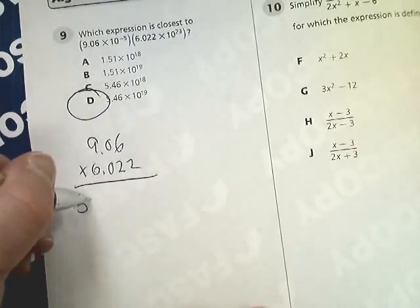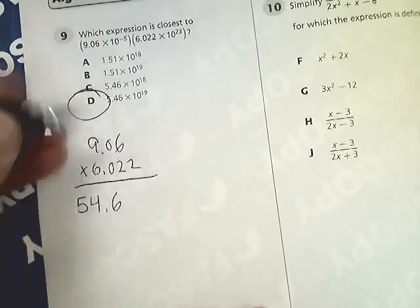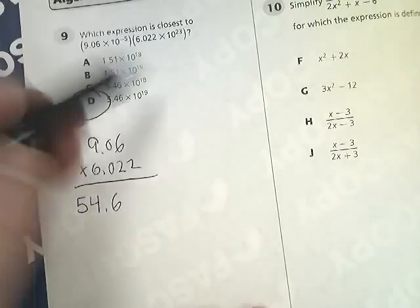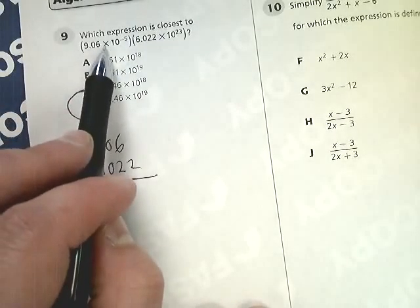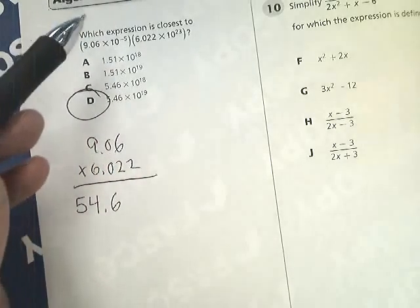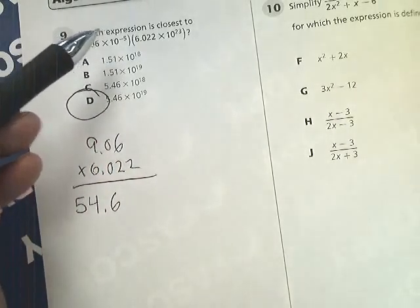And you'll get the equivalent of 54.6. And then you do the 10 to the powers, and since you're multiplying, one less than that would be adding, so you do 23 minus 5. And you get 18.